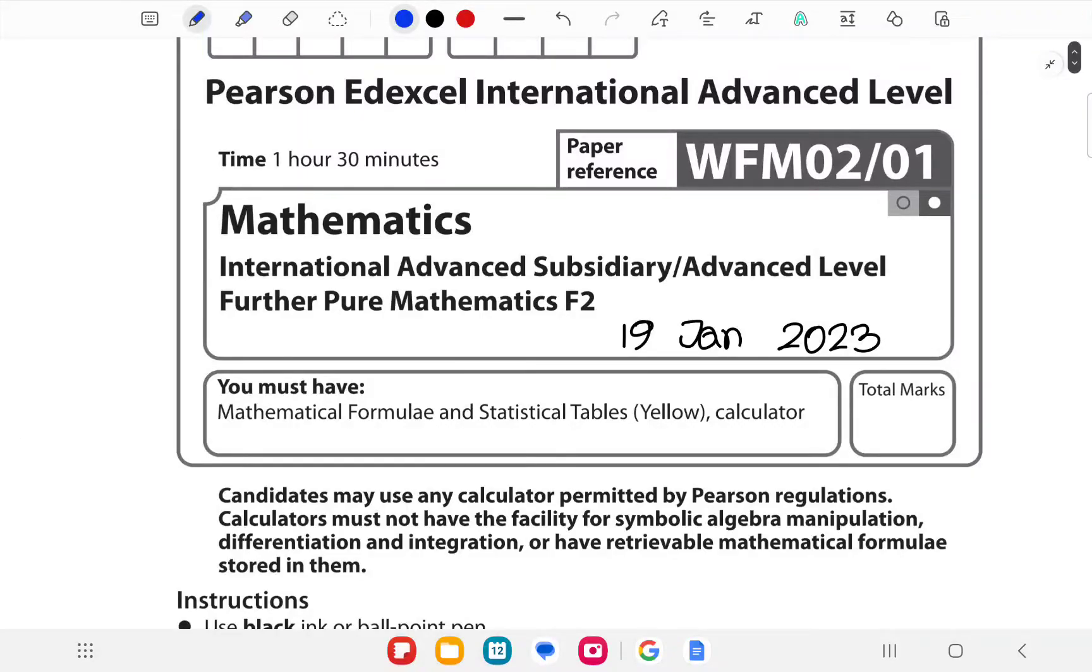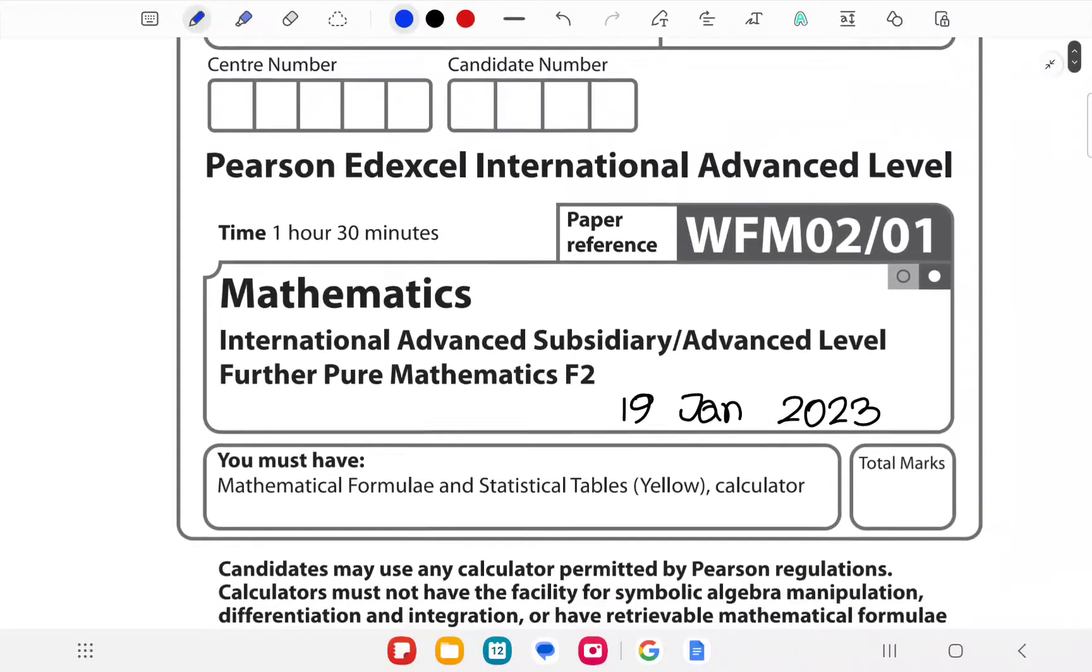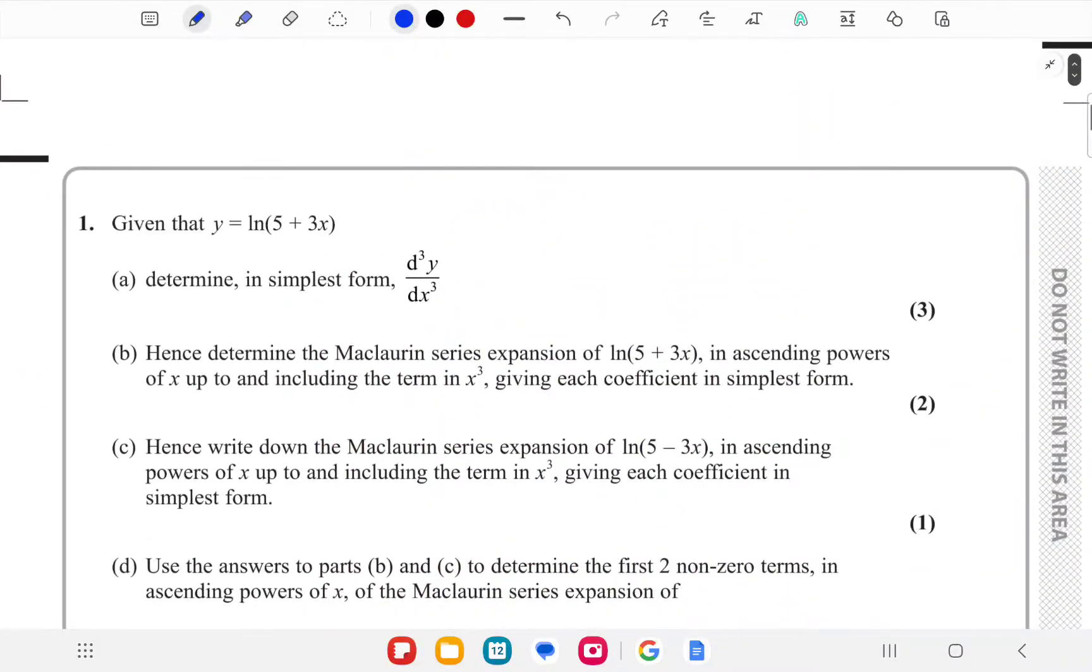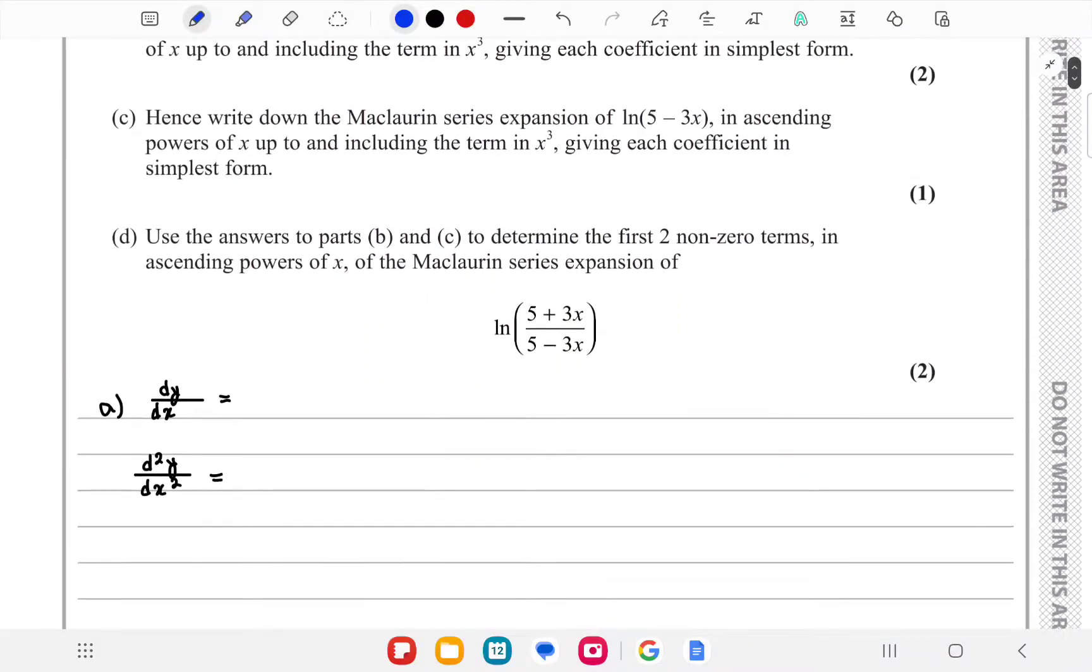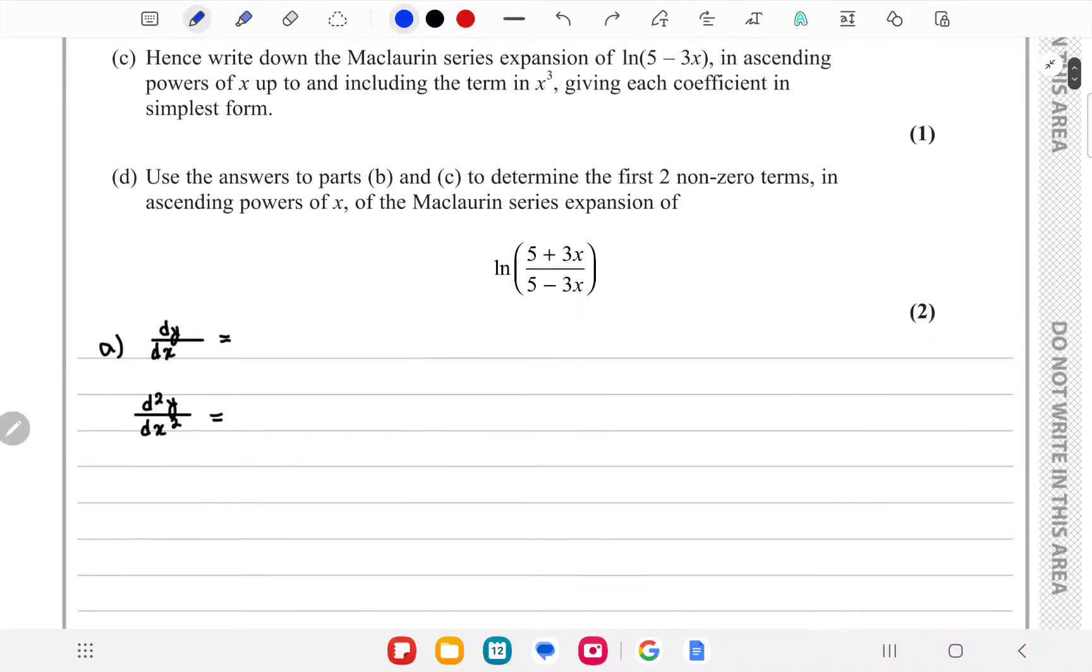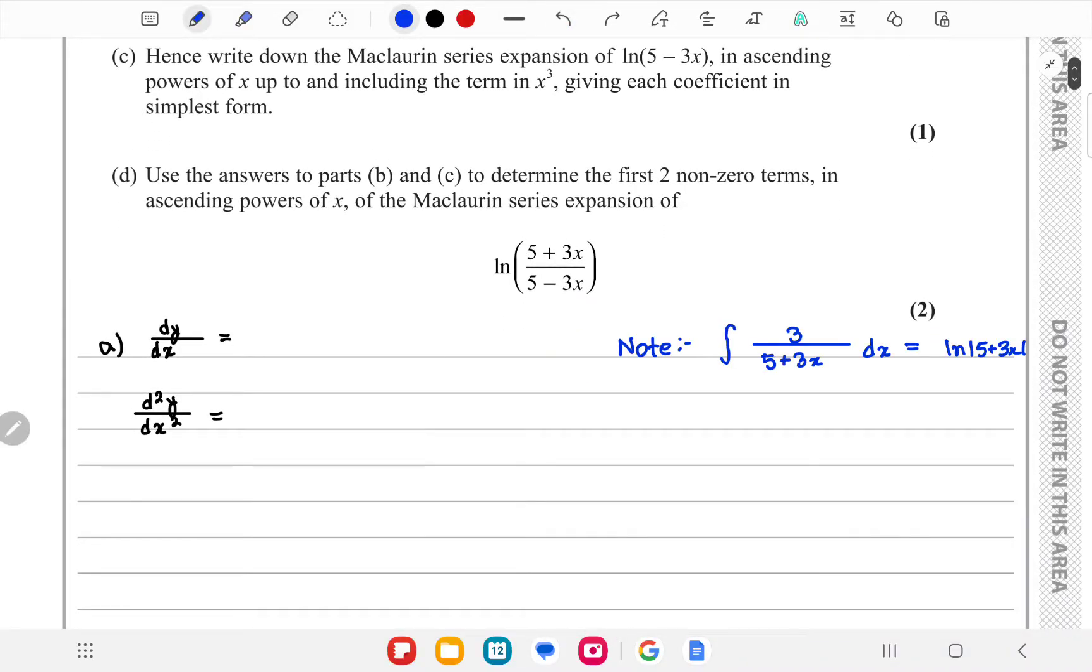We are beginning January 2023 F2, moving on to question number 1a. We have to find d³y/dx³ for the given expression. At first we need to remember that the integral of 3/(5+3x) dx is ln(5+3x). You can also remember the derivation of this directly, but you can also relate it with this.